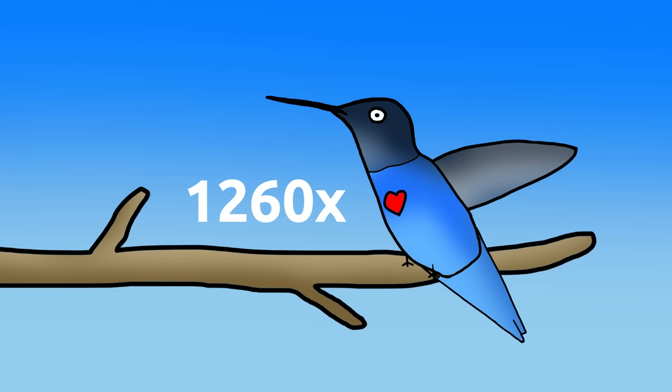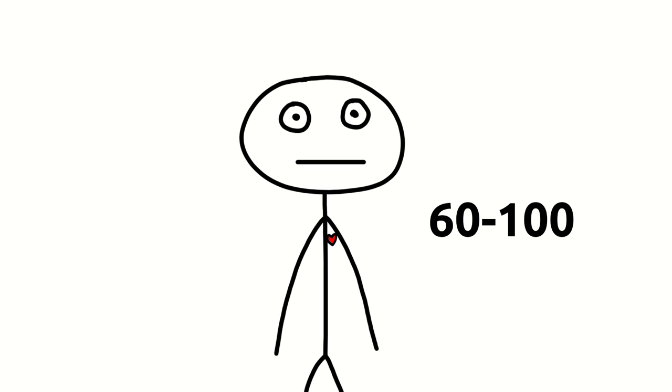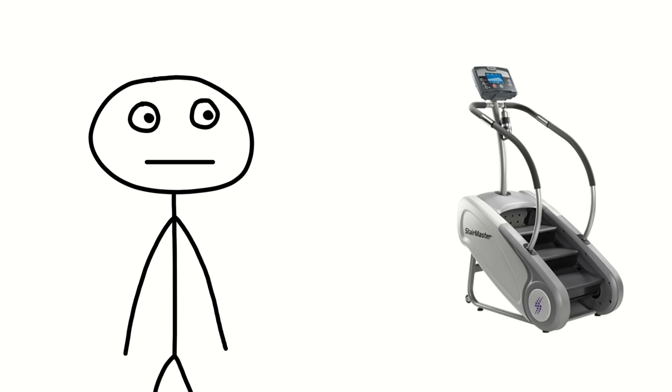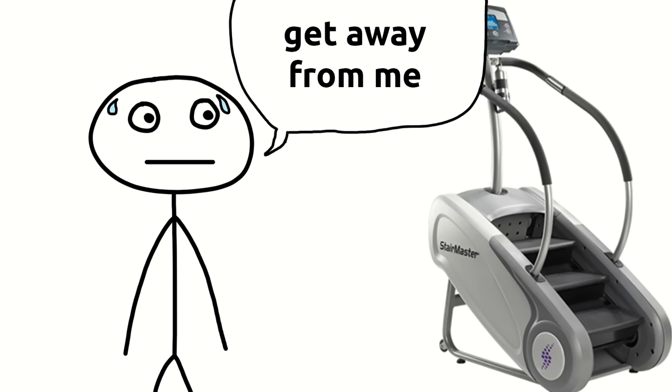As a result, these goobers have a heart that could beat up to 1,260 times in a single minute. For reference, a human has a resting heart rate of around 60-100 beats per minute. Even the most strenuous, most exhausting workout possible shouldn't get you above 220.